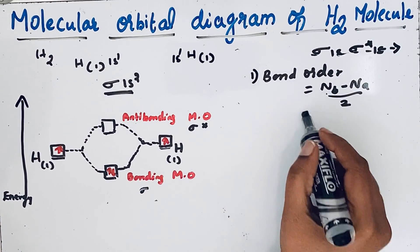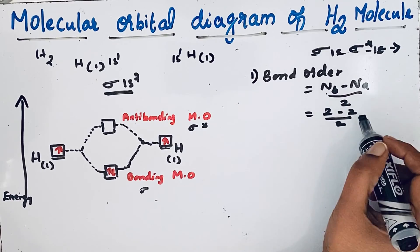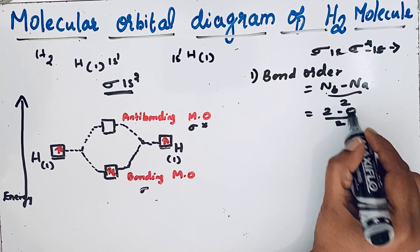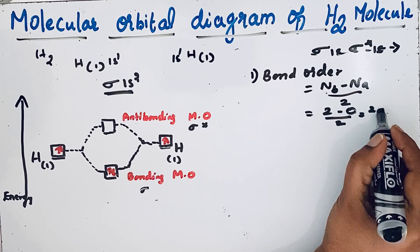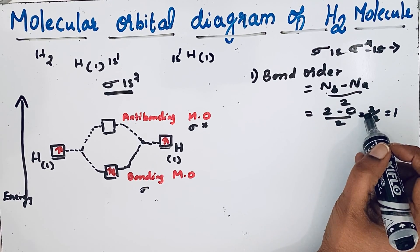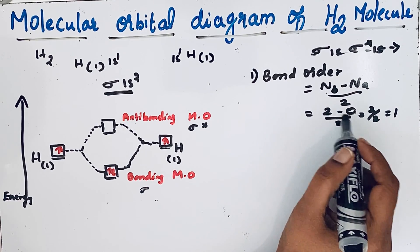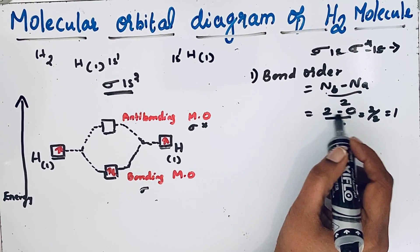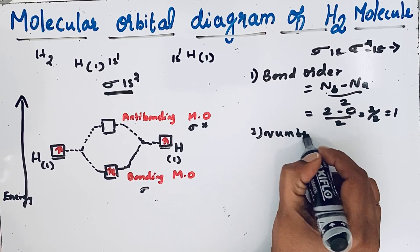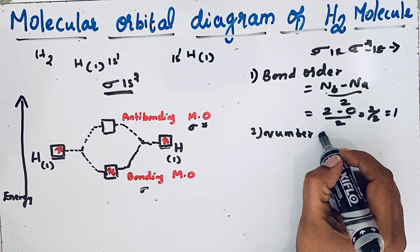We have 2 bonding electrons and 0 antibonding electrons, so bond order = (2 − 0) / 2 = 1. Since the bond order is 1, hydrogen molecule can exist. From the bond order we can also find the number of covalent bonds, which is also 1.